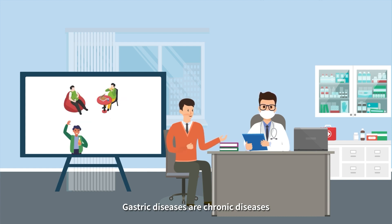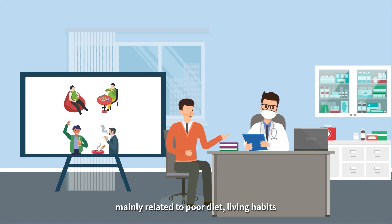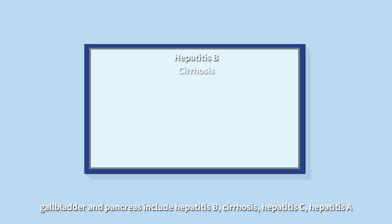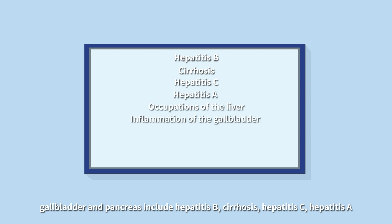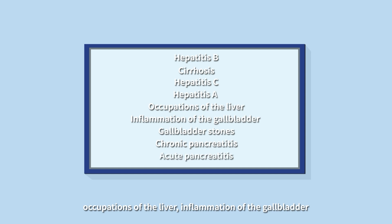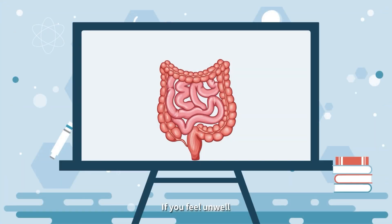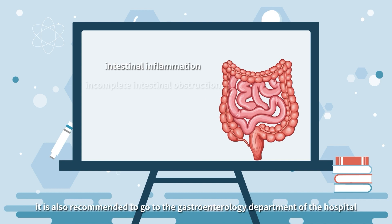Gastric diseases are chronic diseases mainly related to poor diet, living habits, smoking, drinking, and other factors. Common diseases of the liver, gallbladder, and pancreas include hepatitis B, cirrhosis, hepatitis C, hepatitis A, liver inflammation, inflammation of the gallbladder, gallbladder stones, chronic pancreatitis, and acute pancreatitis.